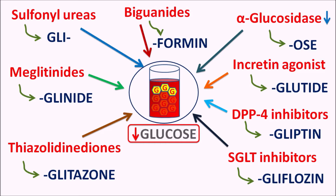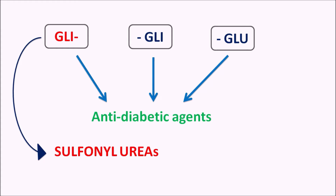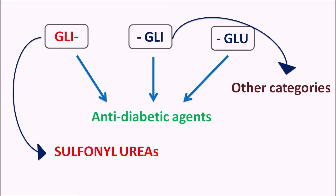Even though each category has a different suffix, it is not easy to remember them because they are somewhat similar and confusing. We can find a simple way to remember. The terms GLY, used as a prefix or infix, and GLUE, used as an infix, all indicate anti-diabetic agents because these drugs affect glucose levels. When GLY is used as a prefix, the drugs are sulfonylureas. When GLY or GLUE appear as an infix within the name, they indicate other categories of anti-diabetic agents.